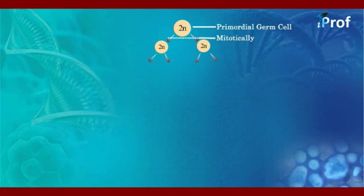Spermatogonia again divide mitotically and form diploid cells. This process is called the multiplication phase.